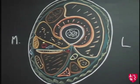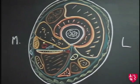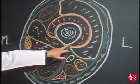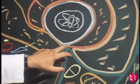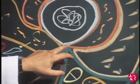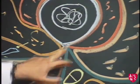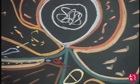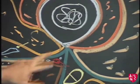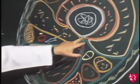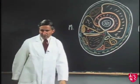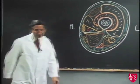Dr. Snell, you mentioned the linea aspera. Where is that structure? The linea aspera is a bony ridge on the posterior surface of the shaft of the femur, and you can see that attached to it are these three fibrous septa. Also, many of the muscles of the thigh gain attachment to the femur along this ridge known as the linea aspera.